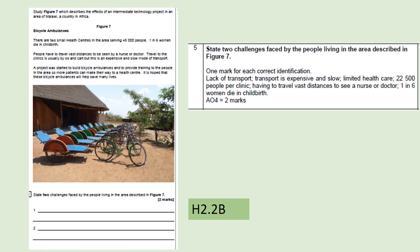Question 2.5 is straightforward — read the source and identify two problems. Answers such as lack of transport, lack of healthcare, or 22,000-plus people per clinic should be easy marks. The main mistake people made was saying the same thing twice — avoid that.